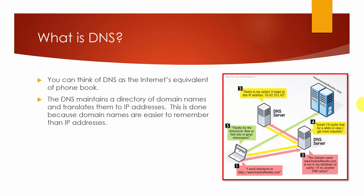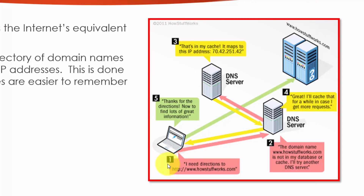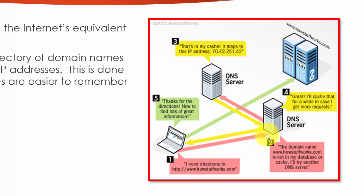Now let's take a look at this image right here on the right. We're going to go through this entire process so that you can get a better understanding of how DNS works. The PC, the laptop, says I need directions to this website, www.howstuffworks.com. From here, the DNS server says the domain name www.howstuffworks.com is not in my database or cache. I'll try another DNS server.